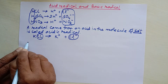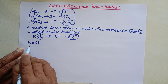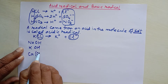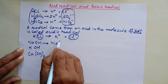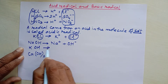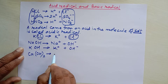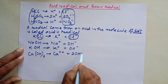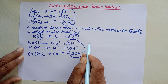Now let's talk about basic radicals. Before that, let's take some examples of bases. Sodium hydroxide is a base, potassium hydroxide is another base, and calcium hydroxide is another base. When they ionize, sodium ion and hydroxide ion form, potassium ion and hydroxide ion form, and calcium ion and hydroxide ion form.